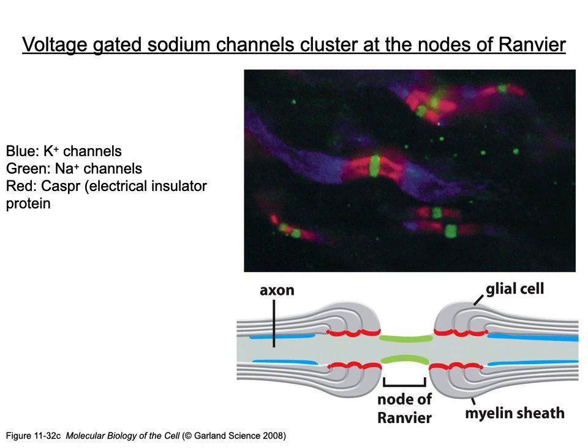Along the axon there are areas without myelin sheath — the nodes of Ranvier, shown in green in the fluorescence panel. These nodes have also been stained for sodium channels, and we can see the sodium channels present in those uninsulated regions.